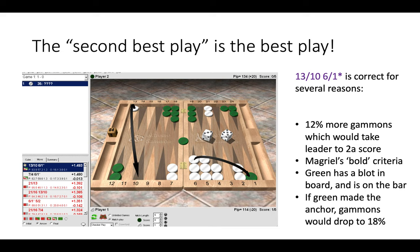Gammons would drop significantly to 18% if we did not hit green off the ace point. So here the best play is 13 to 10, 6 to 1. Think about the match score. Think about the two best players.